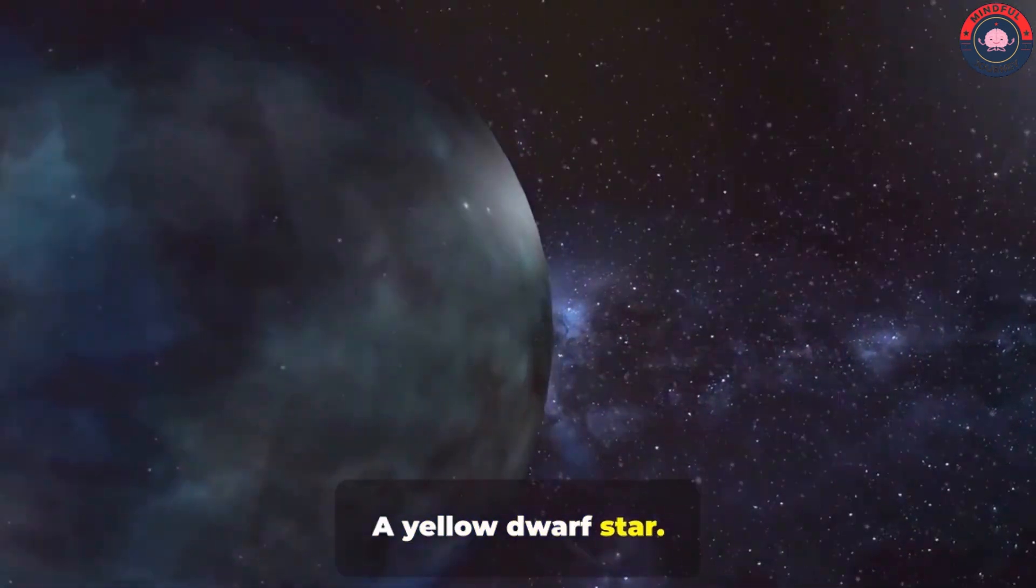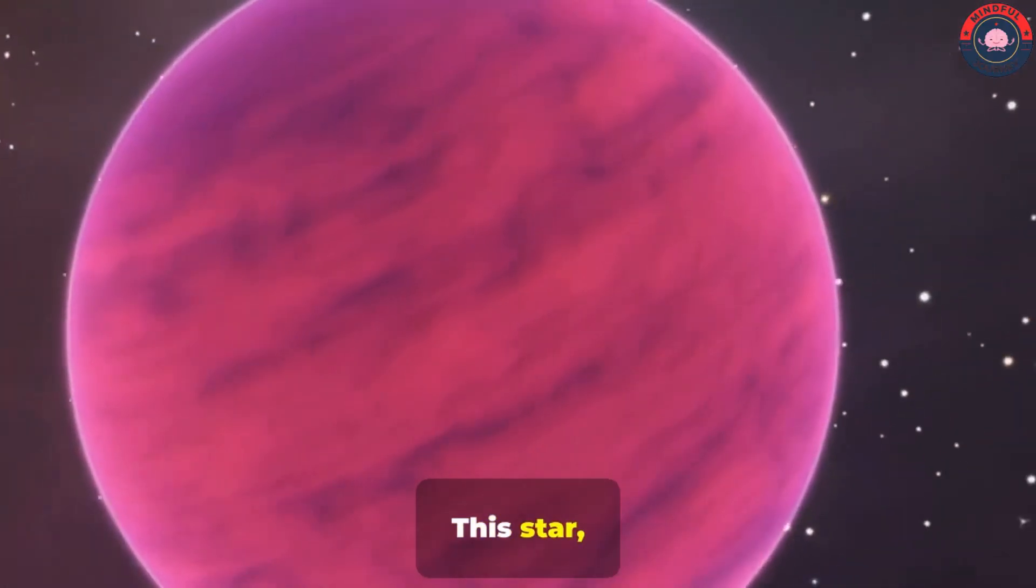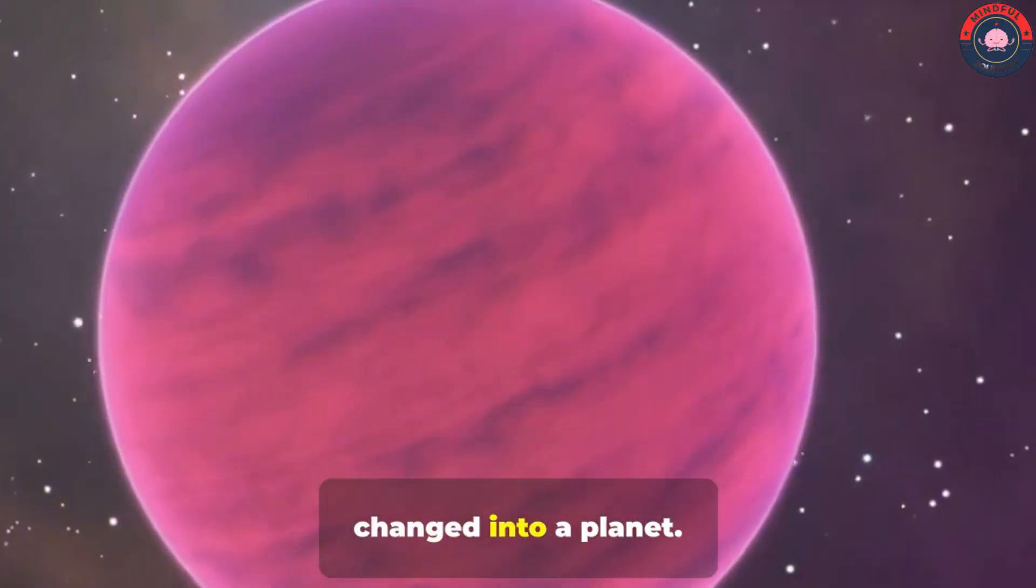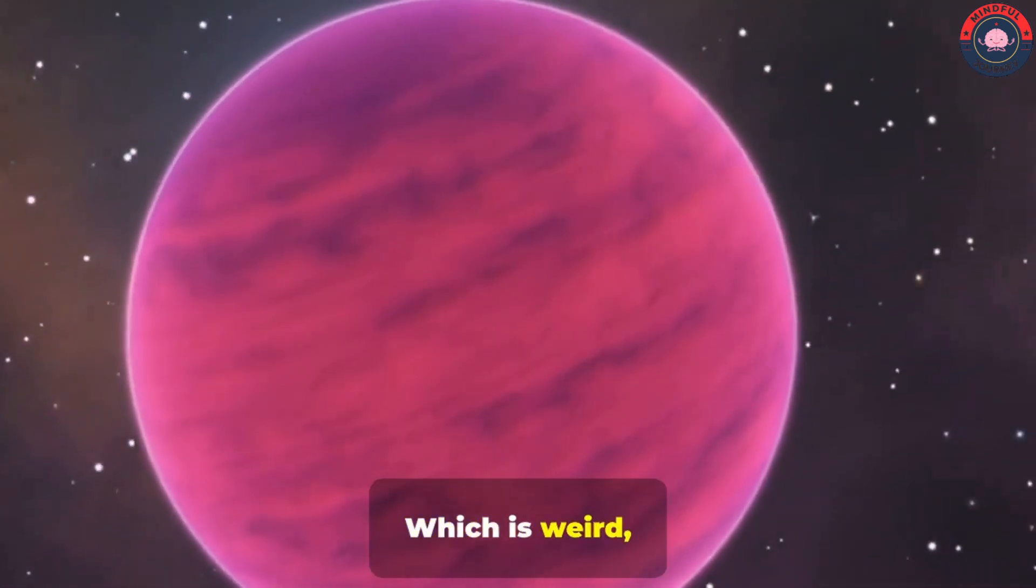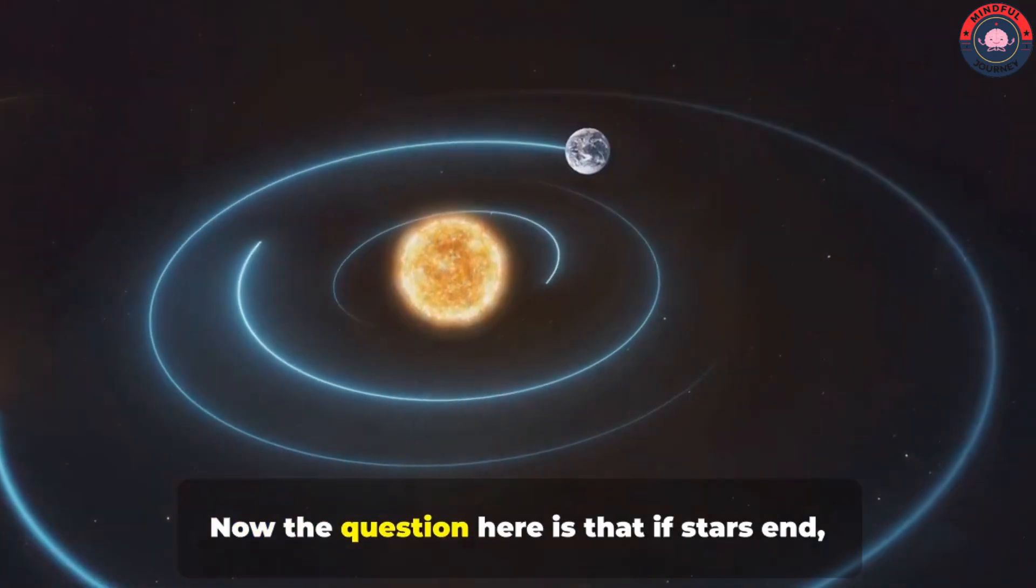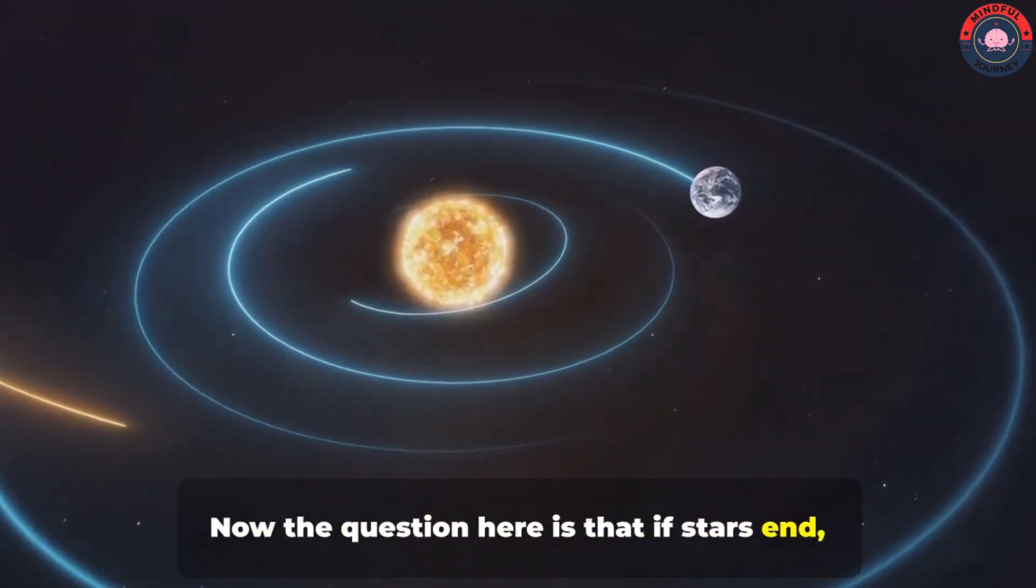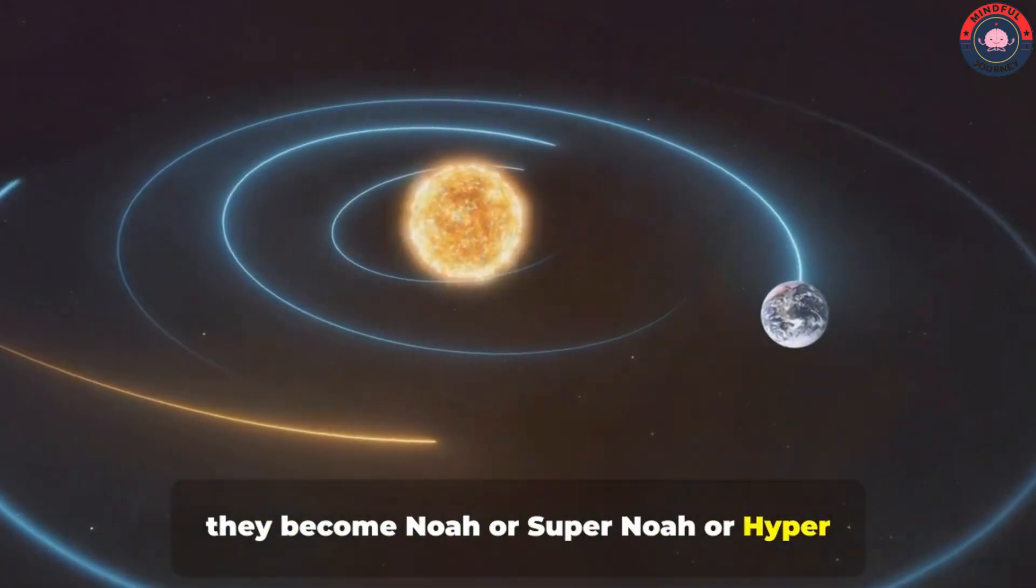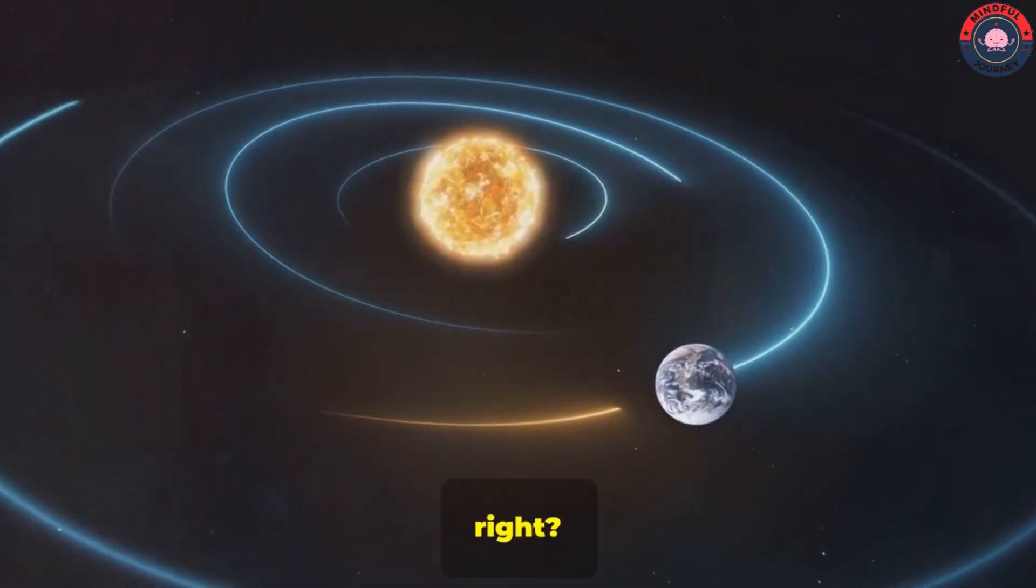This star, along with time, changed into a planet. Which is weird, right? Now, the question here is that if stars end, they become nova, or supernova, or hypernova, or black hole, right?